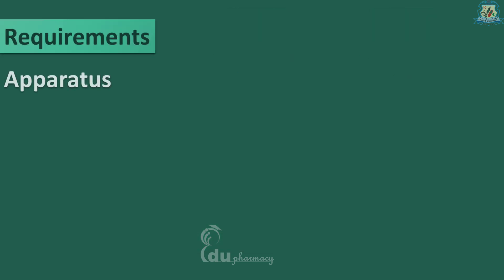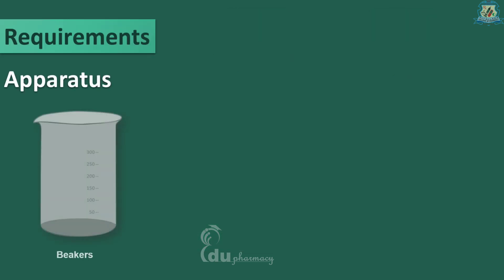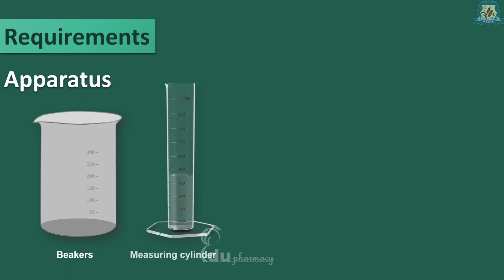Firstly, we will see the requirements. It includes a beaker, measuring cylinder, stirrer and weighing balance.